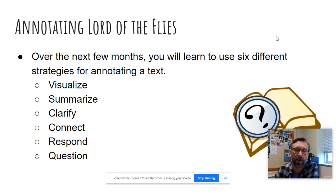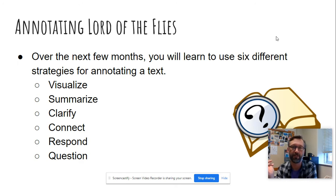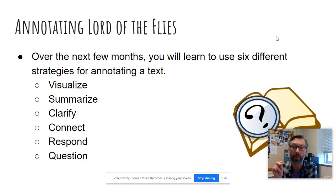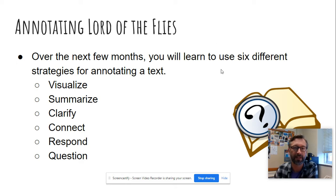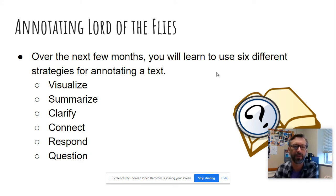So first of all, over the course of this year we're going to be learning six different strategies for annotating a text. Annotating just means to mark up. Now we don't want you to actually write on your book, so what we want you to do is to get some sticky notes or post-it notes that you will then write on and put in your book. Let us know if you need some and we can get you some. But if you've got some around your house, go ahead and use those, otherwise let us know.